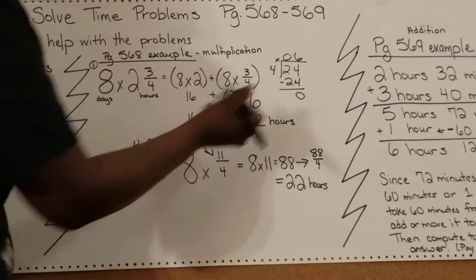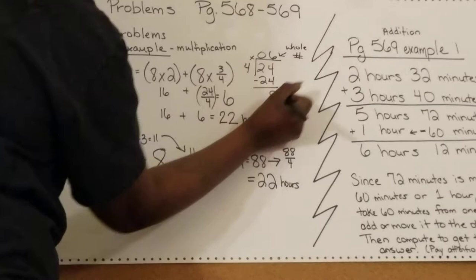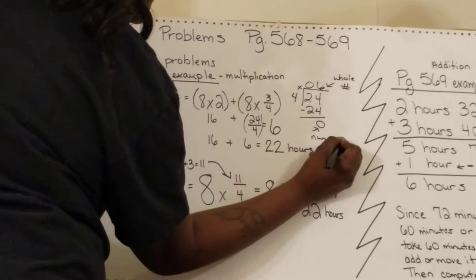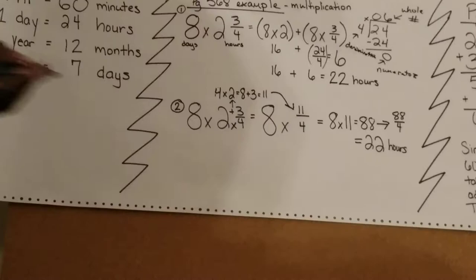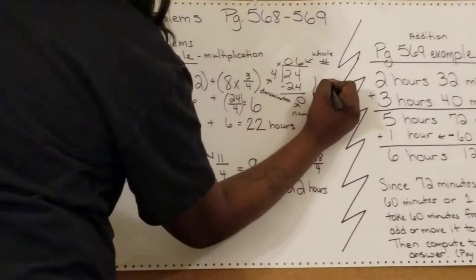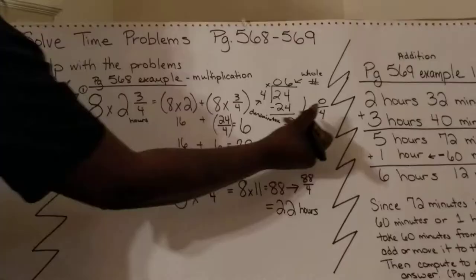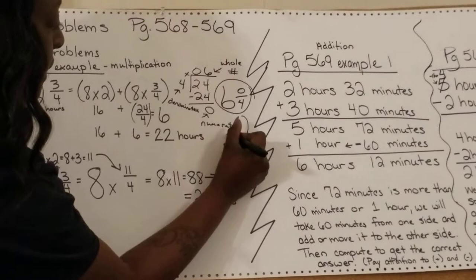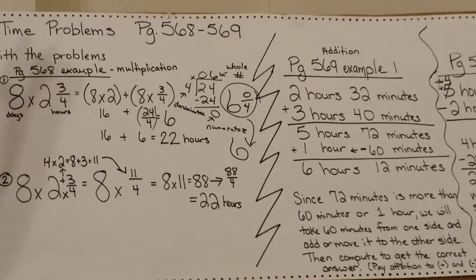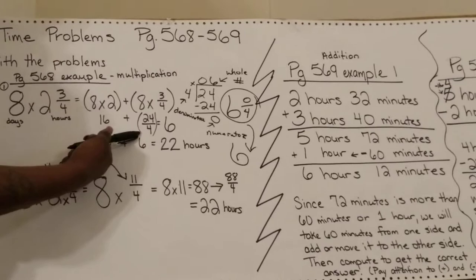My next step would be multiplication. 6 times 4 equals 24. The next step would be subtract. 24 minus 24 equals 0. My next step would be bring down, but there's nothing else to bring down, so I'm finished. Remember, the quotient is our whole number, the remainder is our numerator, and the divisor is our denominator.